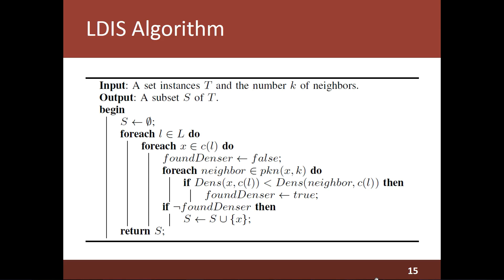This very simple algorithm formalizes the LDIS strategy. The algorithm takes as input a set of instances T and a given value K, which represents the number of neighbors, and produces a set S, which is a subset of T.